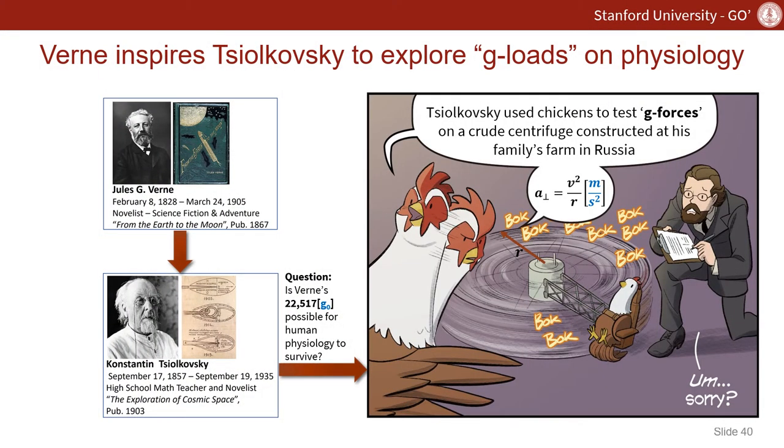Konstantin Tsiolkovsky was an early researcher who used scientific method by building a centrifuge with chickens as test subjects to explore G-loads on physiology. Tsiolkovsky accelerated chickens at only a few G's to cause disorientation and unconsciousness coupled with a high degree of stress and anxiety. As such, he noted 22,000 G's is probably too high for human survivability.